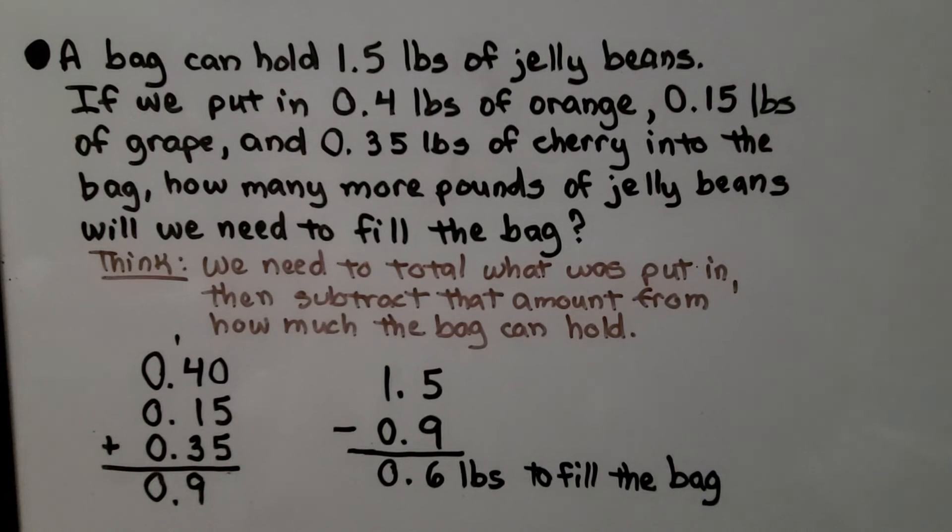We have 9 tenths that's in the bag. We can subtract 1 and 5 tenths minus the 9 tenths to see we have 6 tenths pound more to fill the bag.